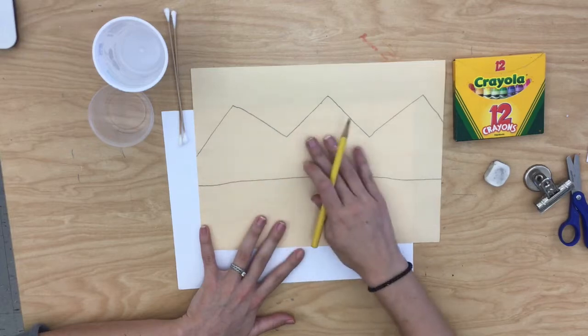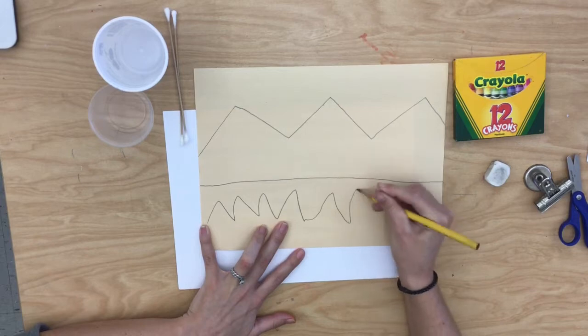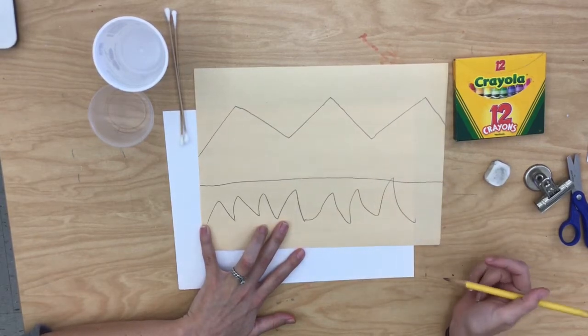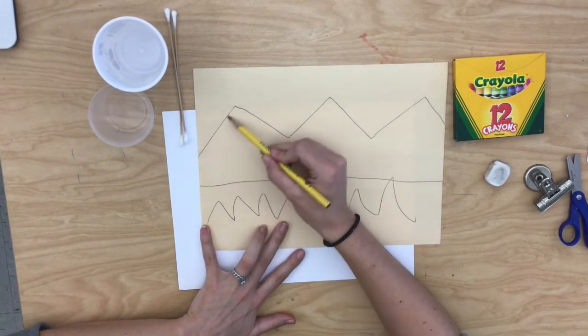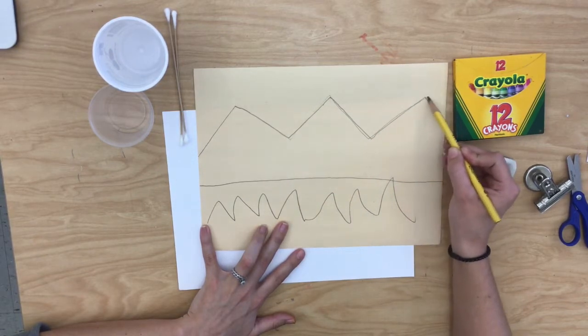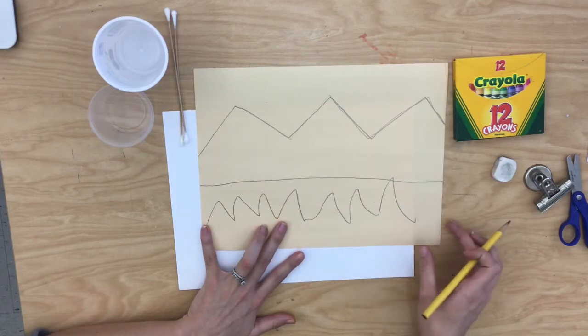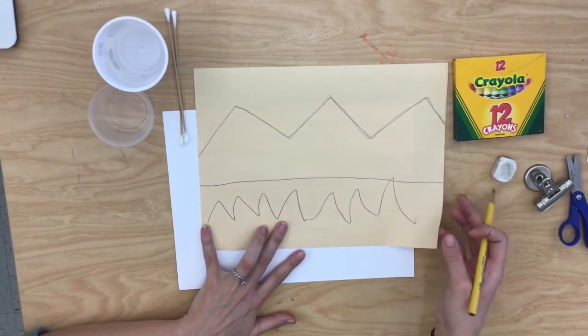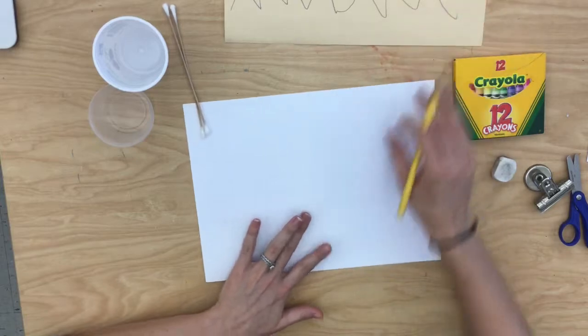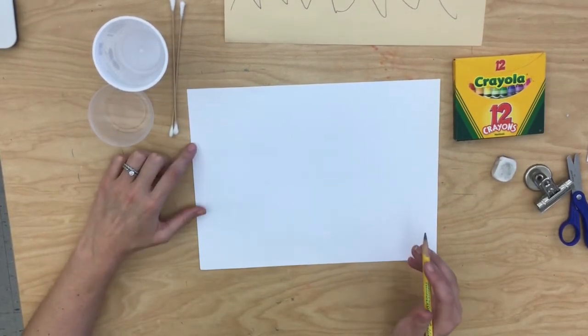Try to only have a few mountains. You don't want to have a whole mountain range like this because that's going to be hard to paint inside of. Try to have only a few peaks on your zigzag line. Now, this paper was just practice. So once you've practiced, we're going to go onto your white piece of paper and we're going to be drawing those same two lines.